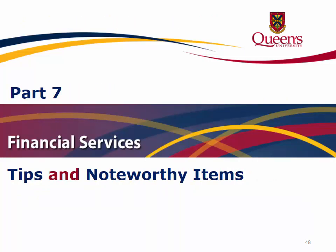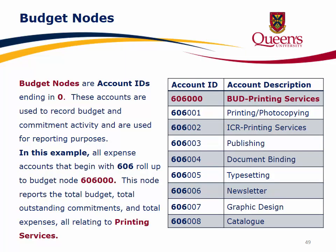Part 7: Tips and Noteworthy Items. Budget Nodes are account IDs ending in zero. These accounts are used to record budget and commitment activity and are used for reporting purposes. For example, all expense accounts that begin with 606 roll up to Budget Node 606000, which reports the total budget, total outstanding commitments, and total expenses all relating to printing services.